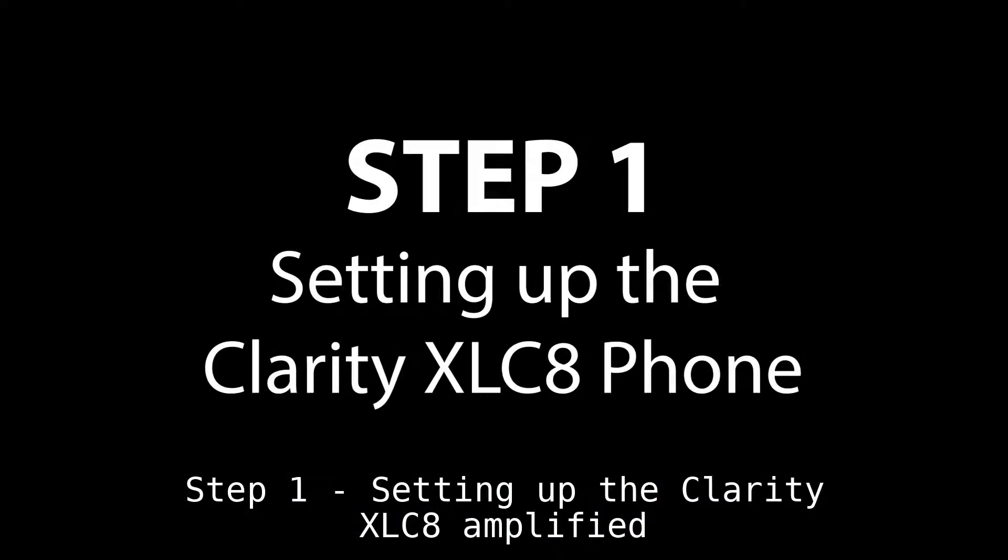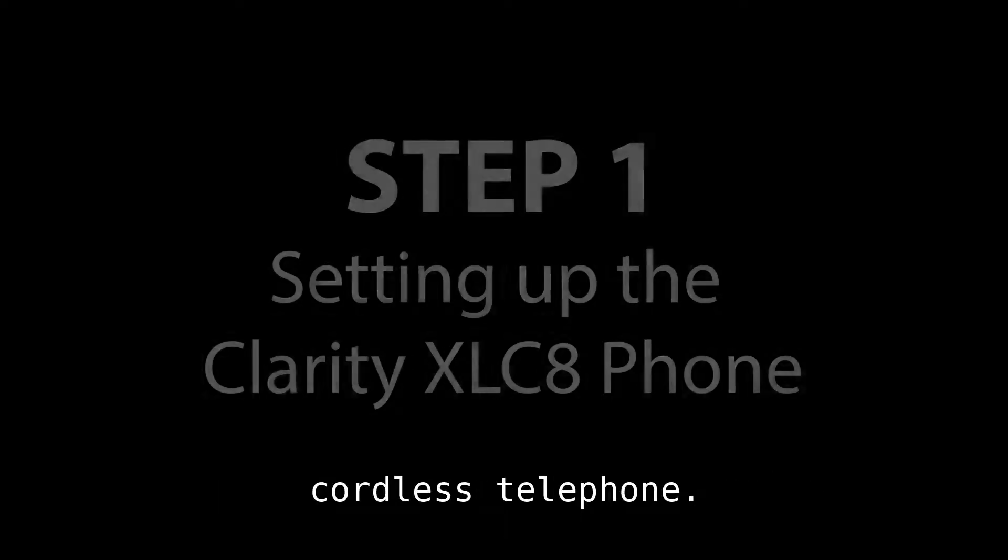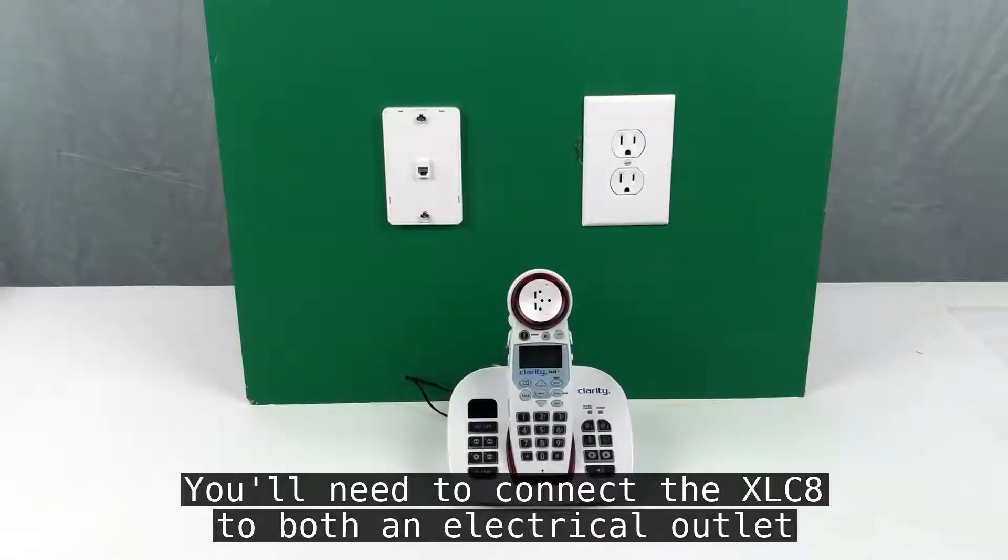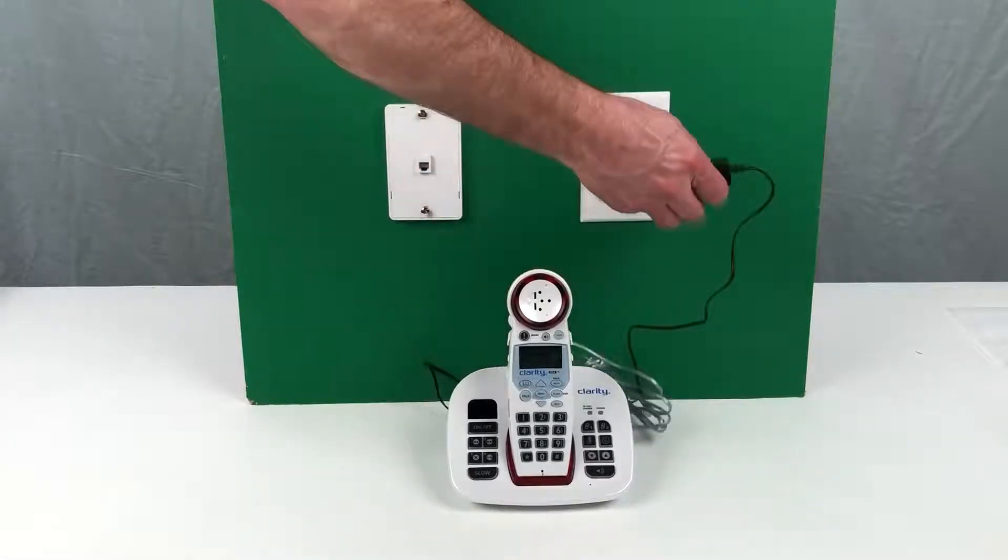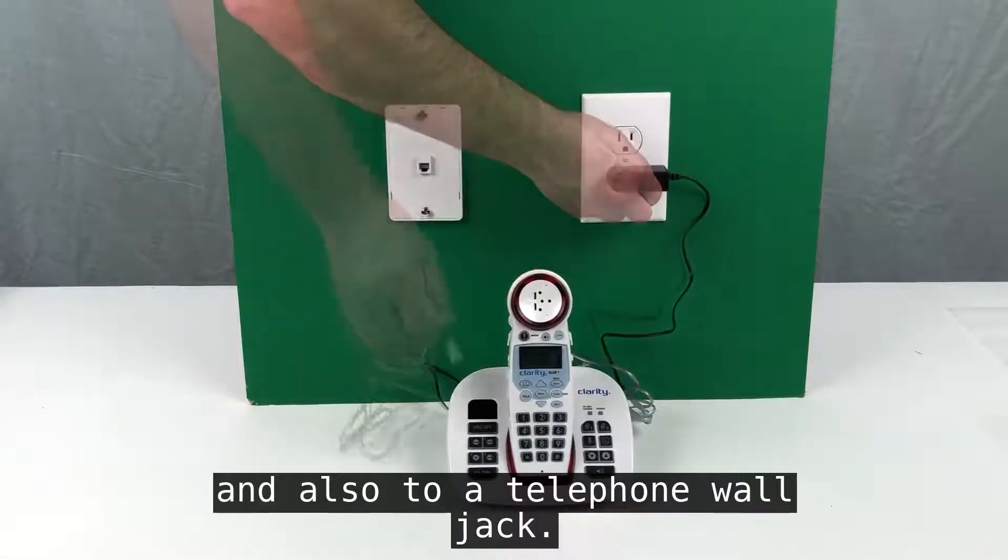Step 1: Setting up the Clarity XLC8 Amplified Cordless Telephone. You'll need to connect the XLC8 to both an electrical outlet and a telephone wall jack.